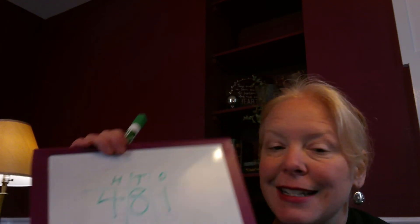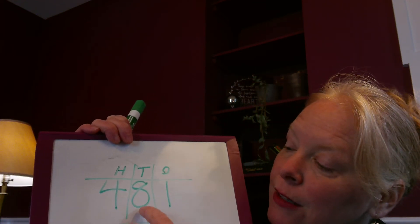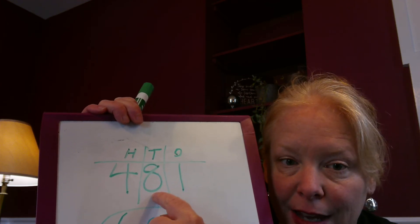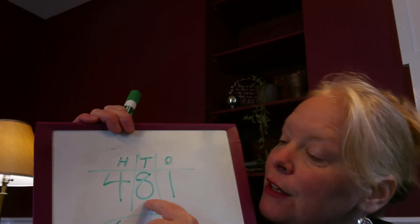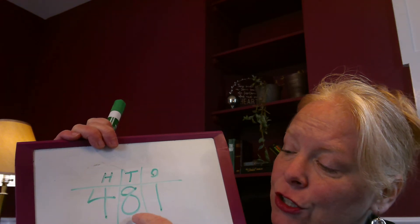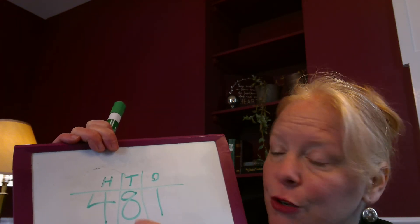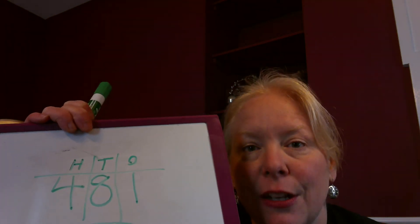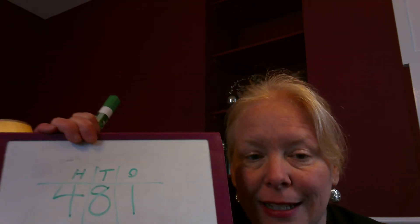The only thing you really have to watch for in this lesson is if you end up making a 10 in one of your columns. For example, if I had asked you to add two tens to 481, eight and two would equal 10, and you would have to regroup. That's where the lesson on regrouping comes in handy.